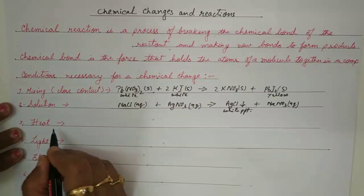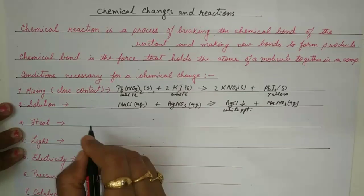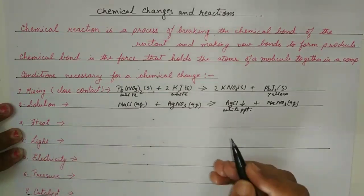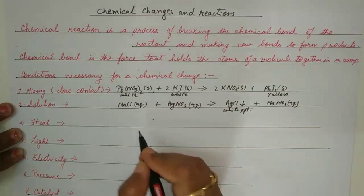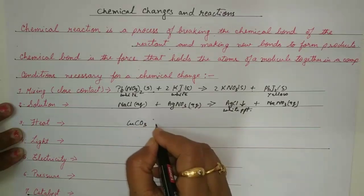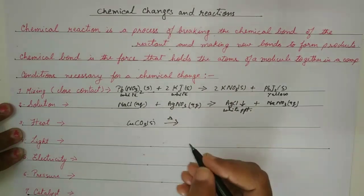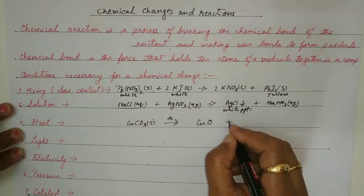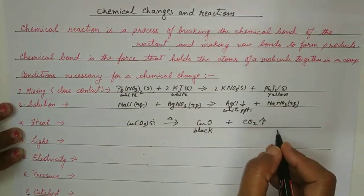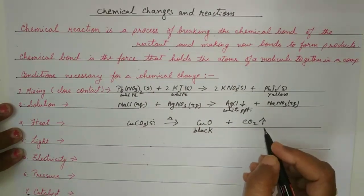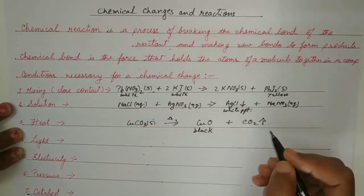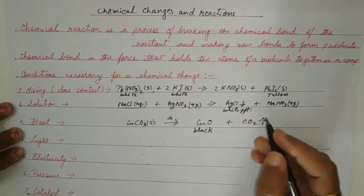The third condition is heat. When a compound is heated, many changes may occur. For example, copper carbonate in solid form, when heated in a dry test tube, gives copper oxide plus carbon dioxide gas. Copper oxide is black in color. Make sure the equation is balanced. Other compounds like lead nitrate also produce chemical changes on heating, producing litharge, reddish-brown nitrogen dioxide gas, and oxygen — reactions we will cover in the next video.